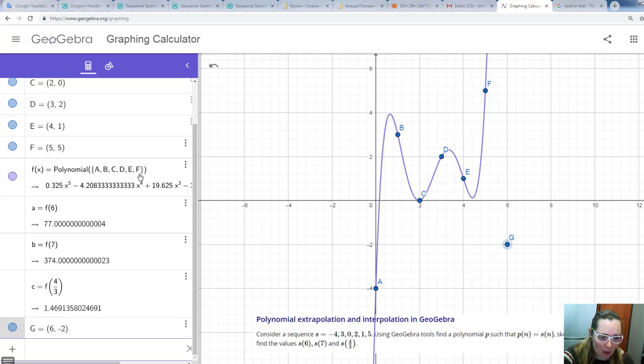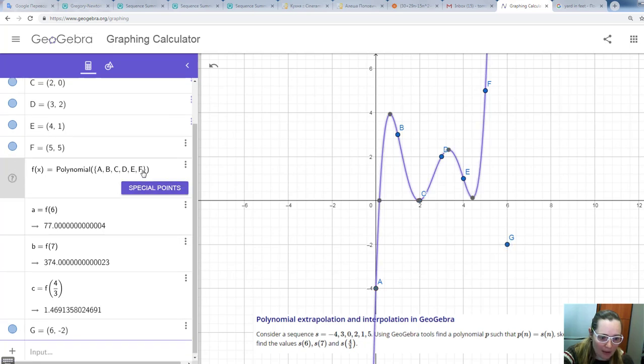And to change our result, we need to add this point to this list. The point G. Press Enter.